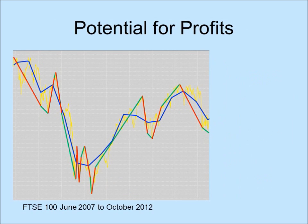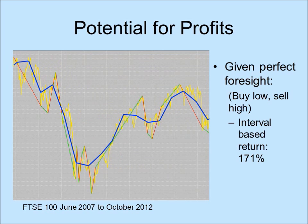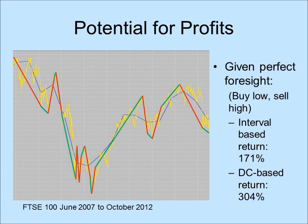A directional change-based summary links up extreme points. By using the same number of points, a directional change-based summary tends to have a longer coastline than the interval-based summary. It means that, given perfect foresight, a trader that uses directional change-based summaries would be able to make more money than a trader who uses interval-based summaries. In this example, an interval-based trader with perfect foresight will be able to make a return of 171%, whereas a directional change-based trader with perfect foresight will be able to make 304%.